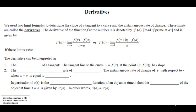Derivatives. We use two limit formulas to determine the slope of a tangent to a curve and the instantaneous rate of change. These limits are called the derivative.